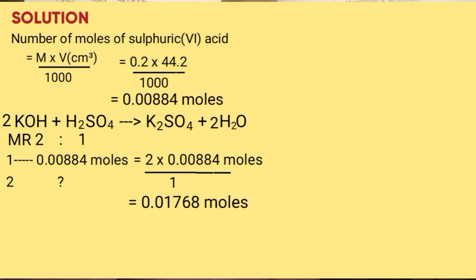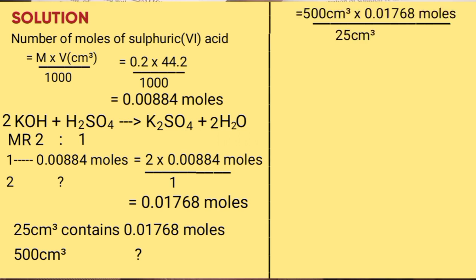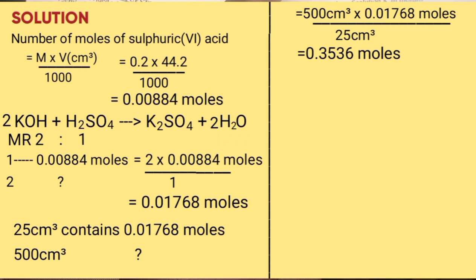Number of moles of potassium hydroxide in 500 cm³: if 25 cm³ contains 0.01768 moles, then for 500 cm³ cross multiply: 500 times 0.01768 over 25. That gives 0.3536 moles.